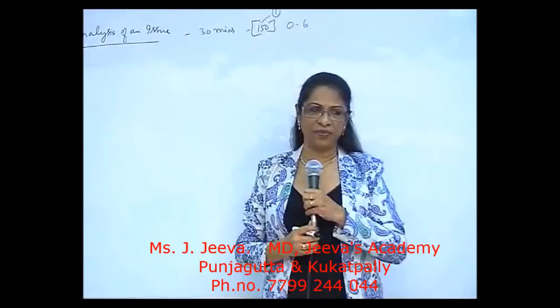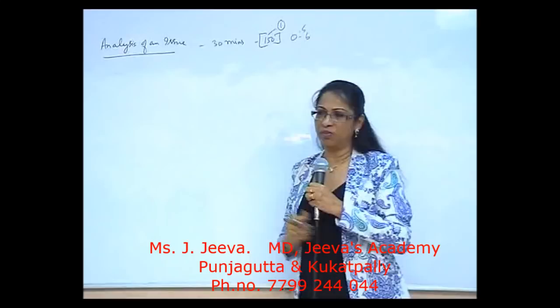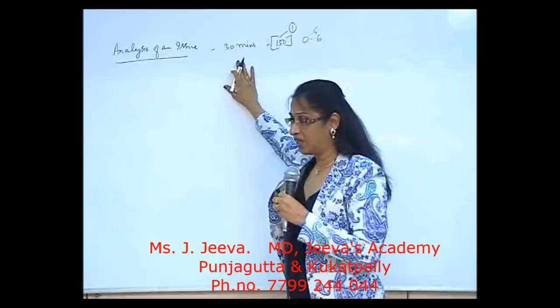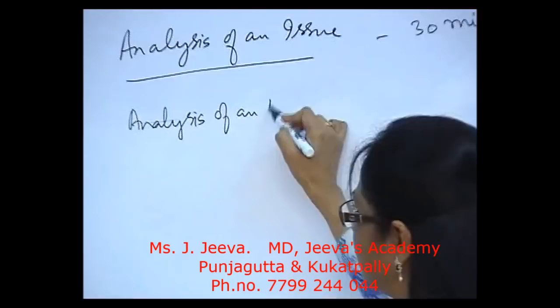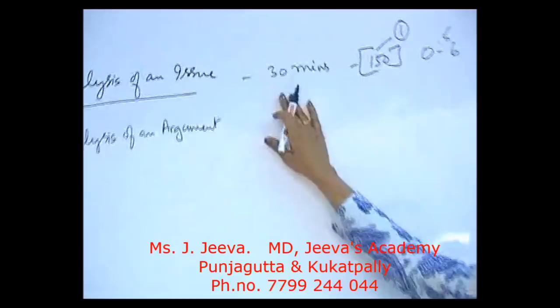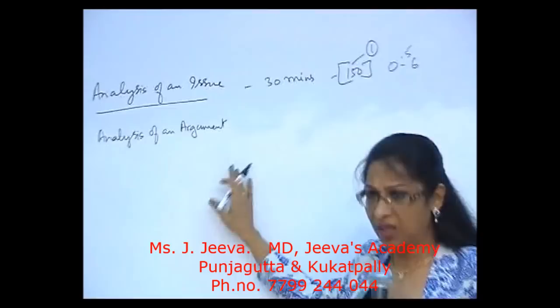Scoring is on a 0.5 scale, so you can get anywhere from 0, 0.5, 1, 1.5, 2, up to 6 points. Once you complete the issue task, you get the analysis of an argument task. Every task comes with a timer — each task gives you 30 minutes. Suppose you complete your issue task in 25 minutes; you cannot take that extra 5 minutes and give it to your argument.